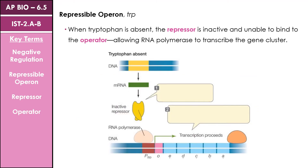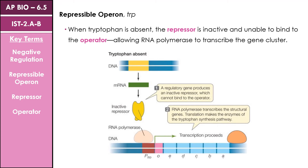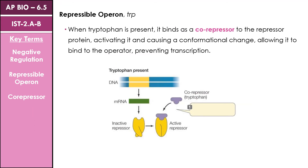Compare that inducible operon to our repressible operon. Here we use the example of the trp operon, involving the production of tryptophan. When tryptophan is absent from the system, we have an inactive repressor which is not able to bind to our operator sequence. So when our repressor is not bound to the operator, RNA polymerase is able to bind and we're able to produce the proteins encoded within that gene region. When tryptophan is present, it binds as a co-repressor to the repressor protein, and once it binds it causes a conformational or shape change within the repressor, allowing it to bind to the operator and prevent transcription.